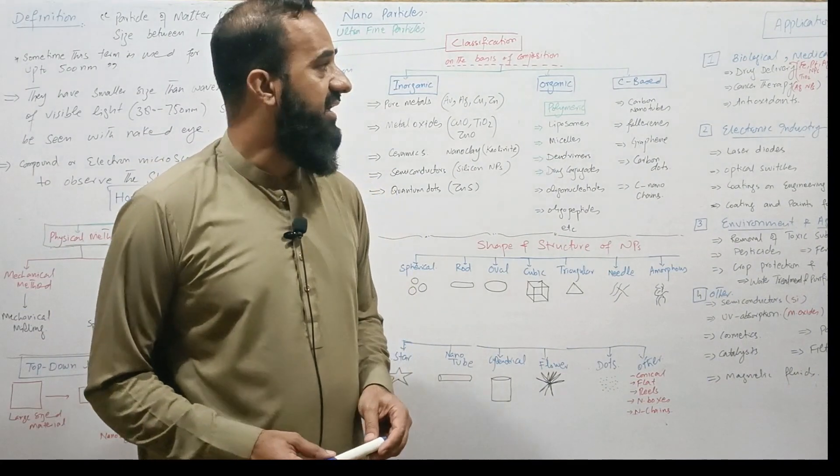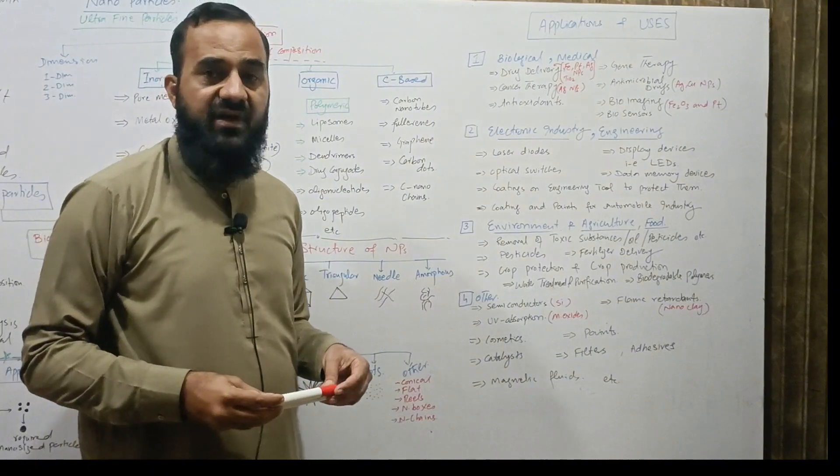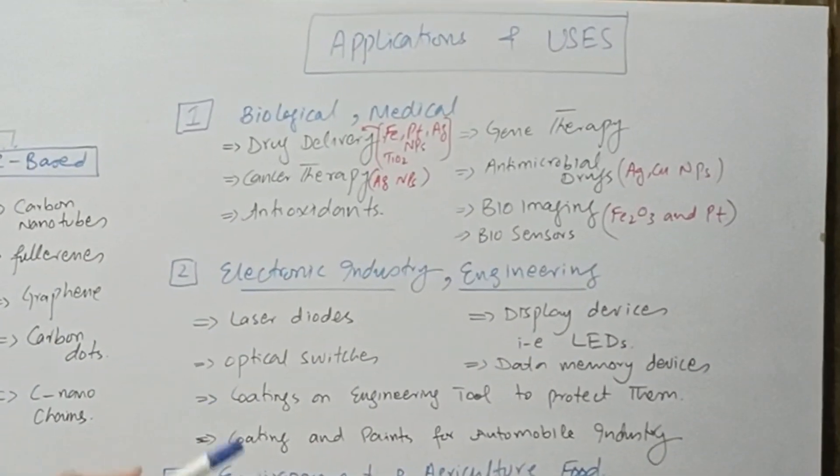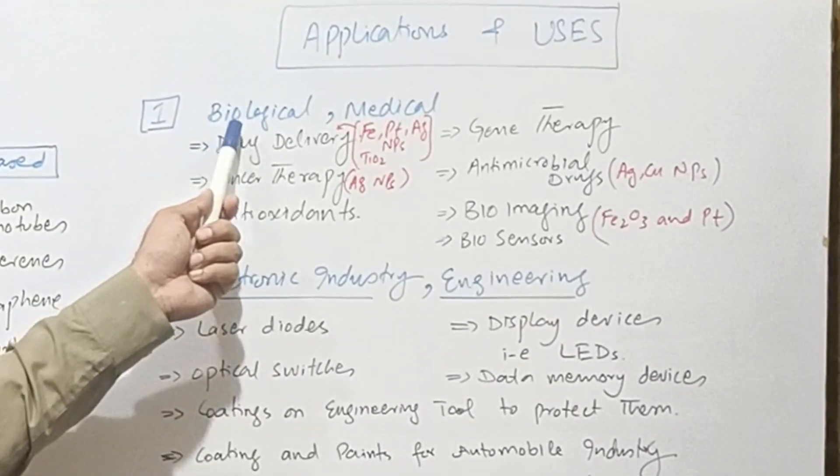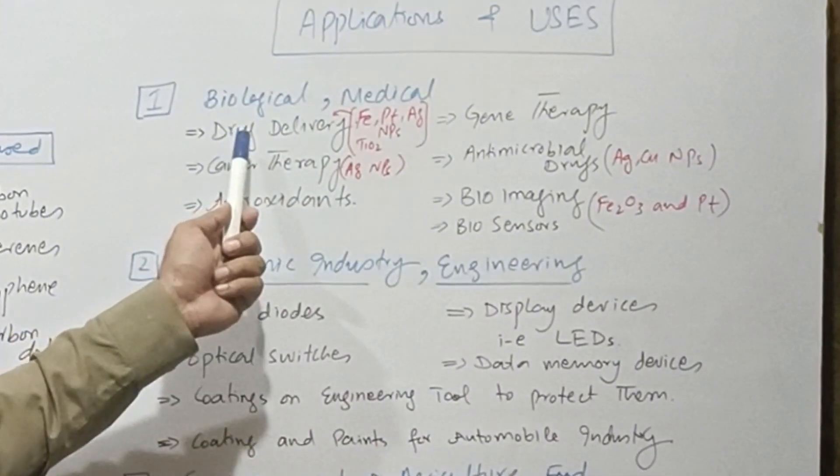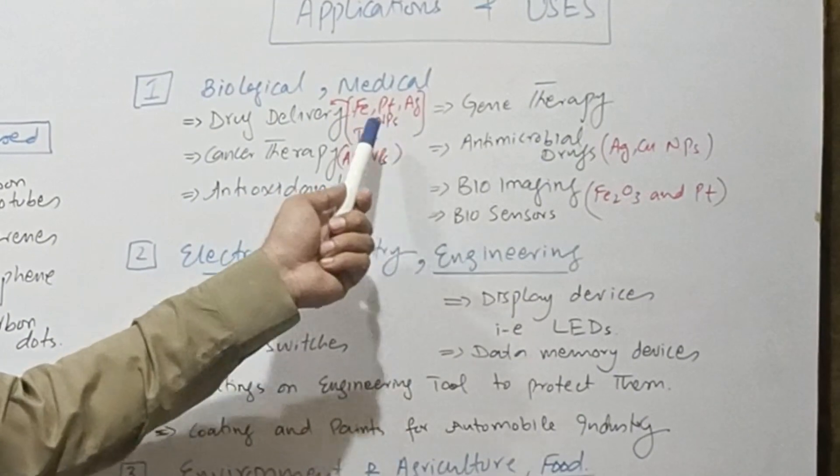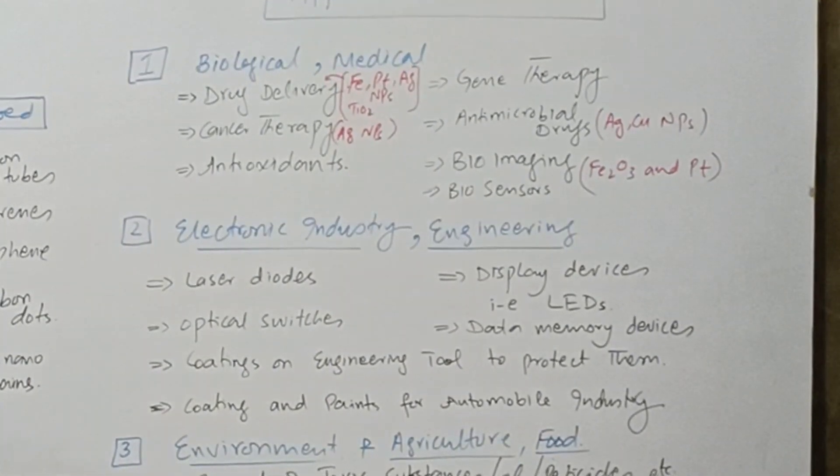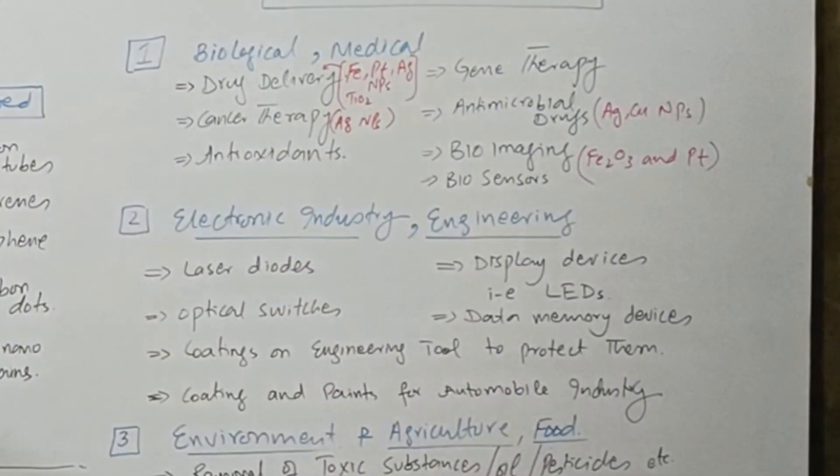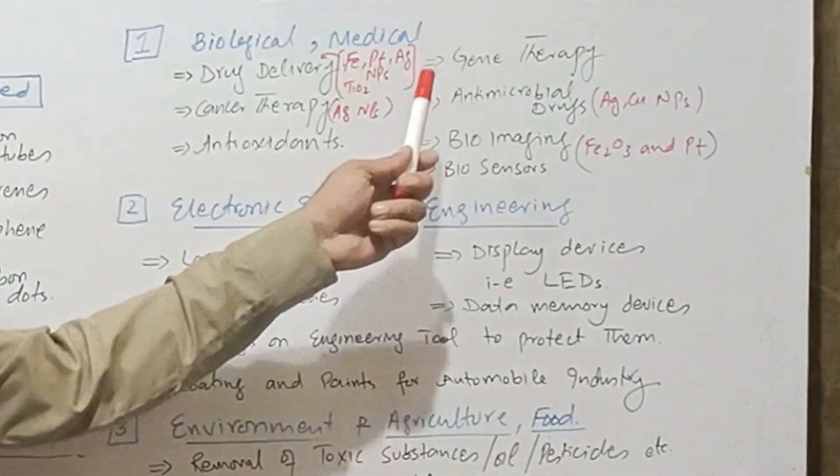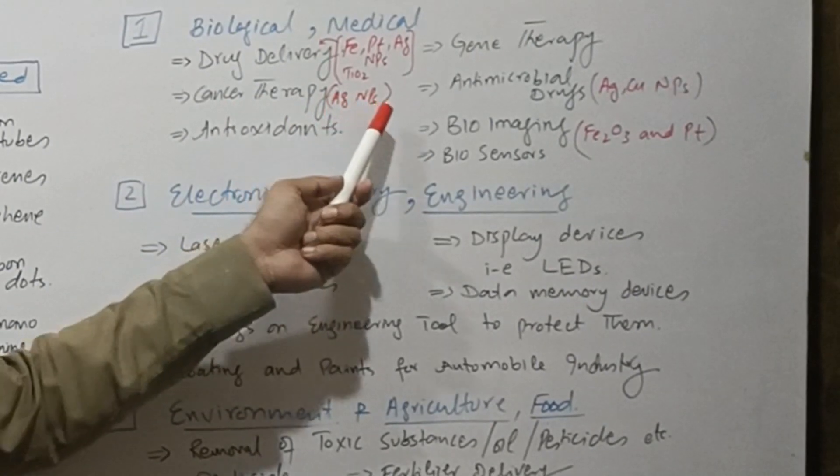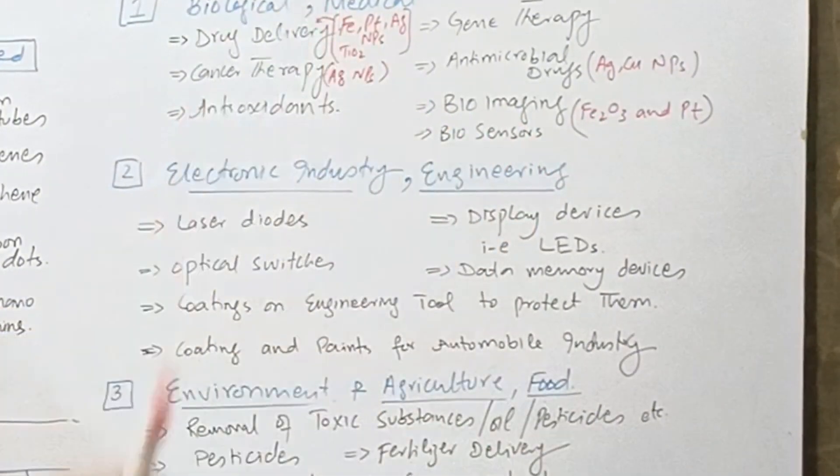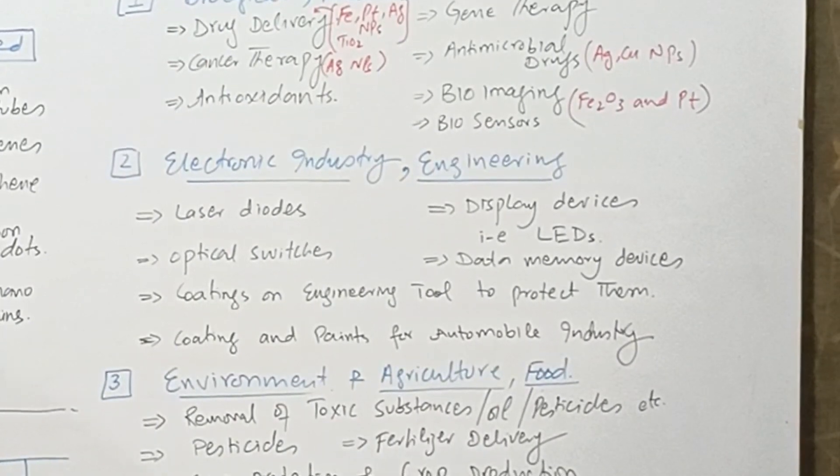Now let's discuss the applications and uses of the nanoparticles. These have wide range of applications in science and related fields. First use of nanoparticles in biological sciences and medical sciences: these particles are used in the preparation of medicine which are essential for the drug delivery system. Nanoparticles are formed with metals and drugs which are used in drug delivery system. These are used in gene therapy, cancer therapy, for example silver nanoparticles in antimicrobial drugs, antioxidants, bioimaging, biosensors, and there are other biomedical applications.